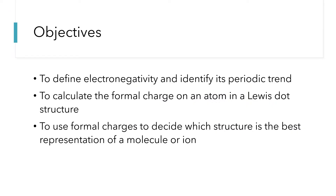To help us with the concept of formal charges, we also first need to define electronegativity, and it turns out it's a periodic property like ionization energy or atomic radius. Then we'll see how you calculate the formal charge on an atom in a Lewis dot structure, and then once we know what those formal charges are, we'll see how we use them to decide which structure is the best representation of a molecule or ion.